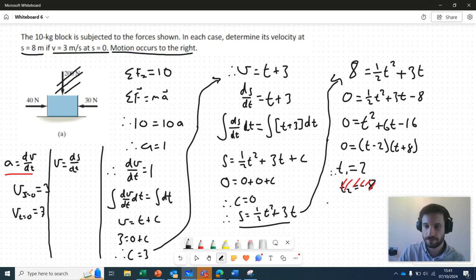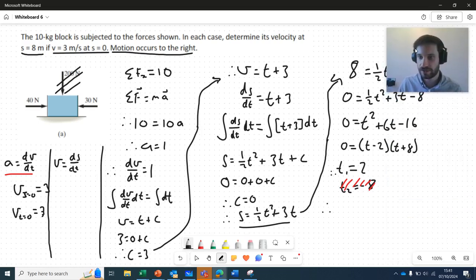So we understand now that at a displacement of eight, two seconds have passed. When two seconds have passed, we've displaced eight meters. We can therefore say that V at T equals two is equal to V at S equals eight is equal to, well, we have velocity in terms of time here. We can substitute two in for T is equal to five meters per second. Boom. So this took quite a lot of work. This is why I mentioned earlier that this is quite a challenging problem. There may be simpler ways to approach this problem, but this is just the way that I would approach this problem.